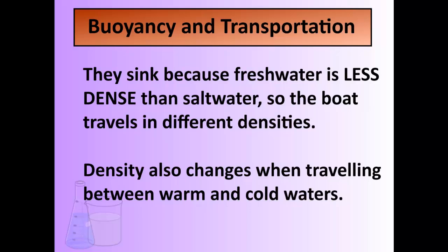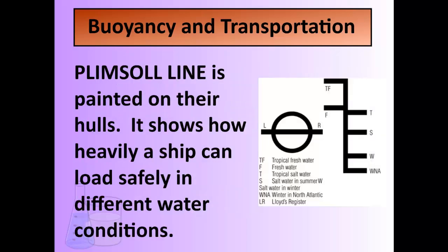Density also changes when you travel between warm and cold waters. On the sides of ships you'll see something called a plimsoll line, painted on the hull, showing where the boat should be sitting in the water depending on temperature and whether it's fresh or salt water. You can see tropical freshwater at one level, salt water in summer higher up, and it would float even higher in winters in the North Atlantic because cold salt water has even smaller spaces between particles, making it denser.